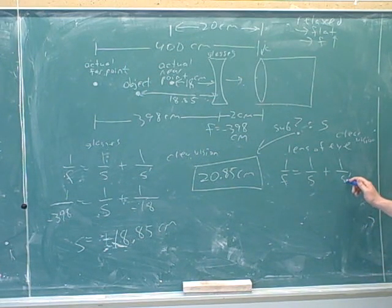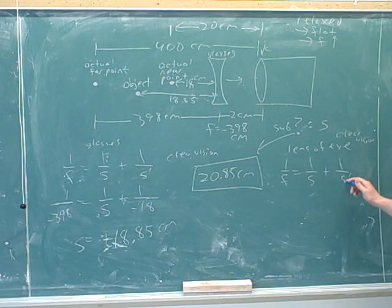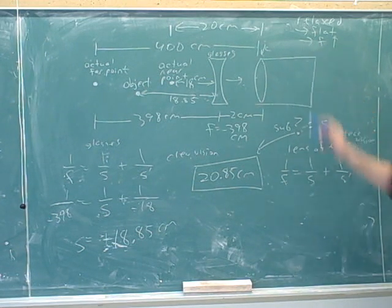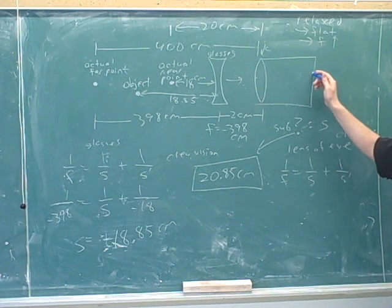And this stands for? The distance from the image to the lens of the eye. That's right. And for clear vision, how long will that be? The diameter of your eye. And what would be positive or negative? Positive. Because we want to form a real image.